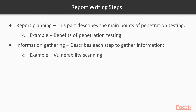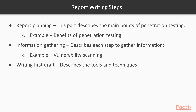The second stage is information gathering, which means gathering technical information about the target. This part describes each step to gather information — for example, vulnerability scanning. At this stage we are not explaining vulnerability scanning, we are performing it to gather information about the target.